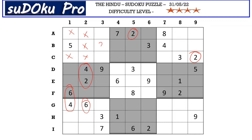And the remaining numbers are four and six, so let's mark these two cells with a four-six pair.